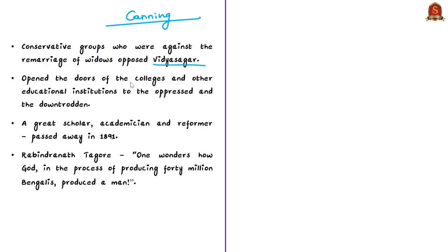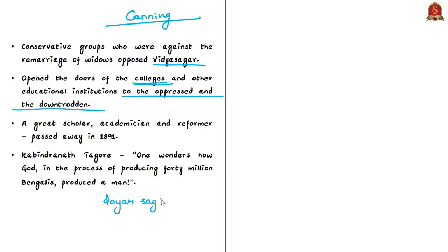Ishwar Chandra also opened the doors of colleges and other educational institutions to students tagged by dominant castes as lower caste students — places that were earlier reserved for very few dominant castes. Because of his immense generosity and kind-heartedness, people started to address him as Dayanidhi Sagar, Ocean of Kindness. He was a great scholar, academician, and social reformer. He passed away at the age of 70 years in 1891.